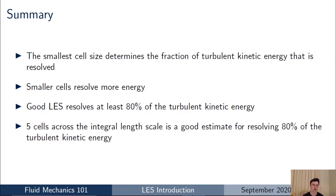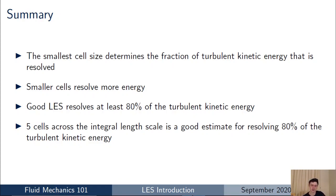A quick summary to wrap up: when creating your mesh, it's the smallest cell size that determines the fraction of turbulent kinetic energy resolved — smaller cells resolve more energy. The aim is to resolve at least 80% of the turbulent kinetic energy with your LES; most common best practice is between 80% and 90%. The approximate estimate is that five cells across the integral length scale is a good starting point for achieving 80% TKE resolution.